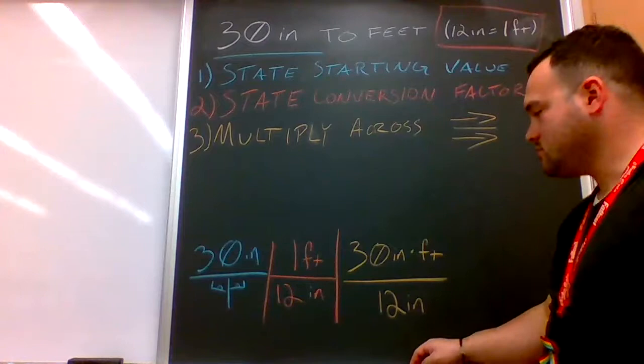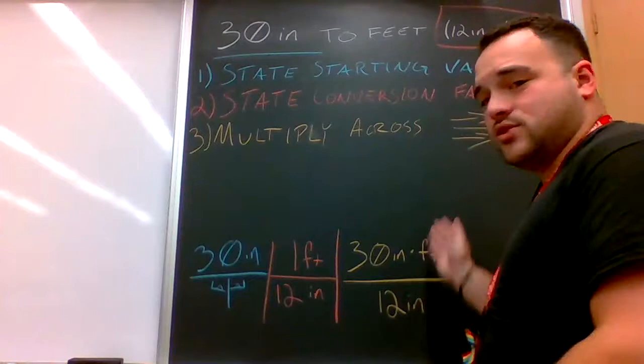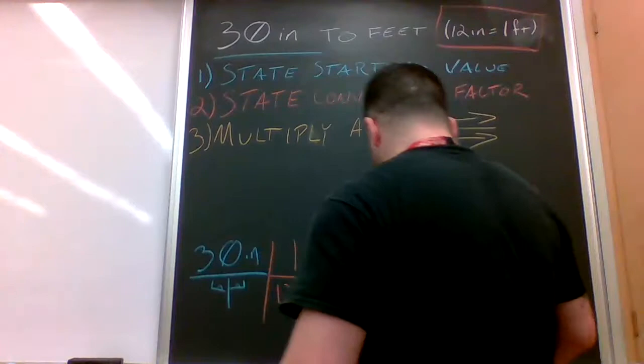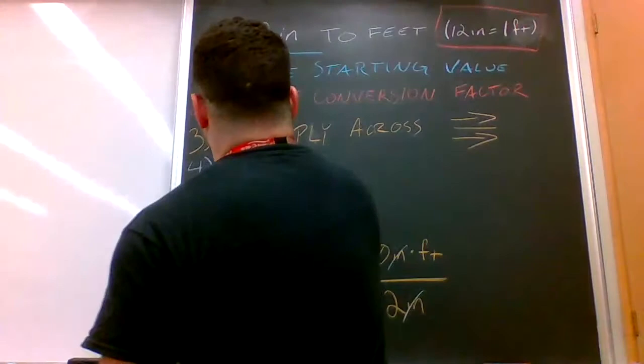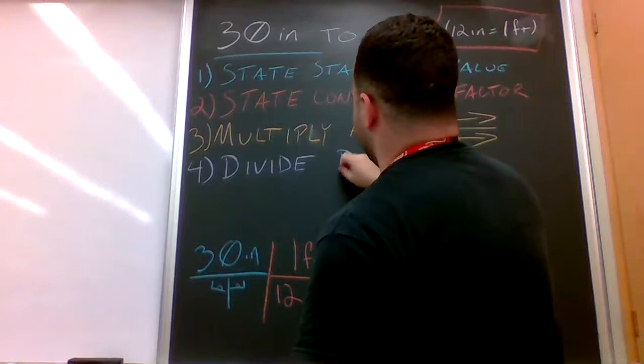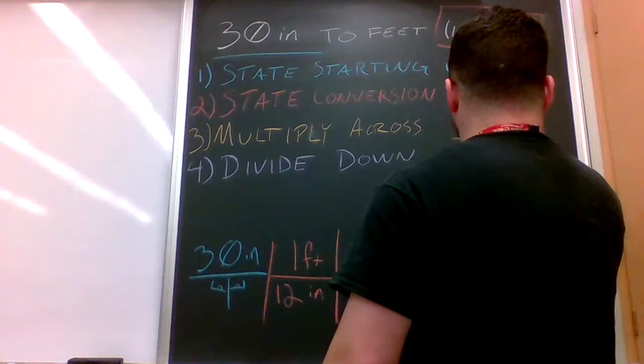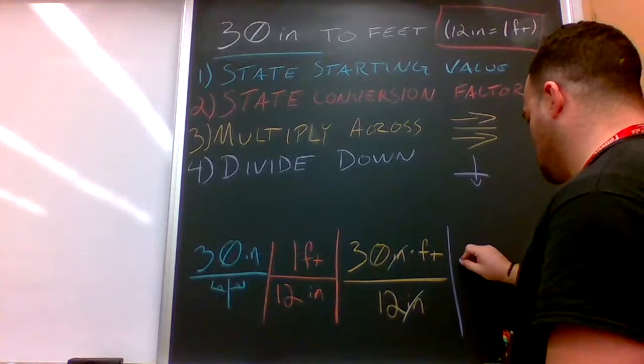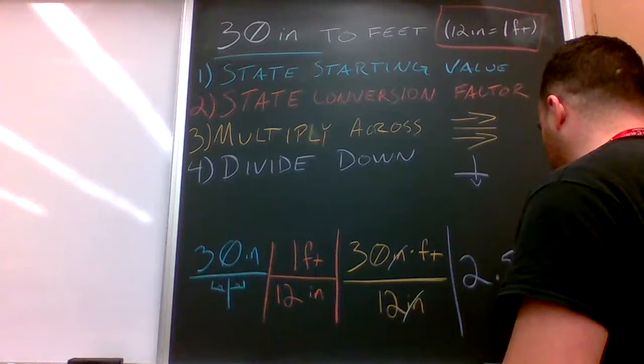Now here's kind of a semi-step in between where you can cancel out anything on the top and bottom. So you can go ahead and cancel the inches out. They're gone, adios. And then the actual step four is divide down.